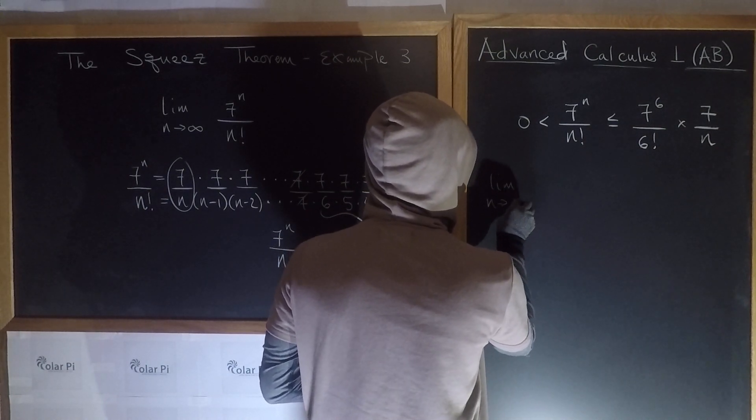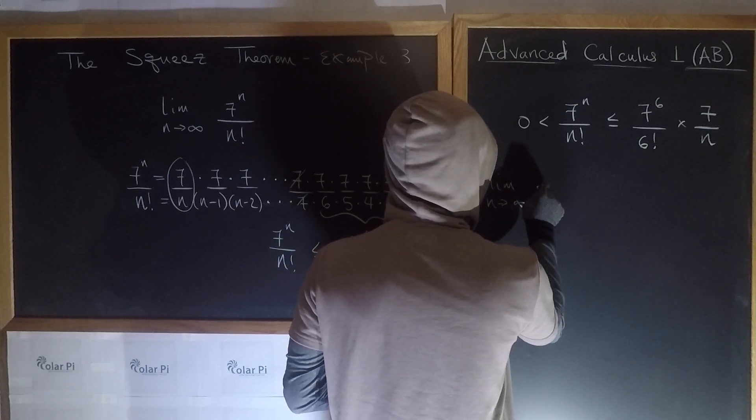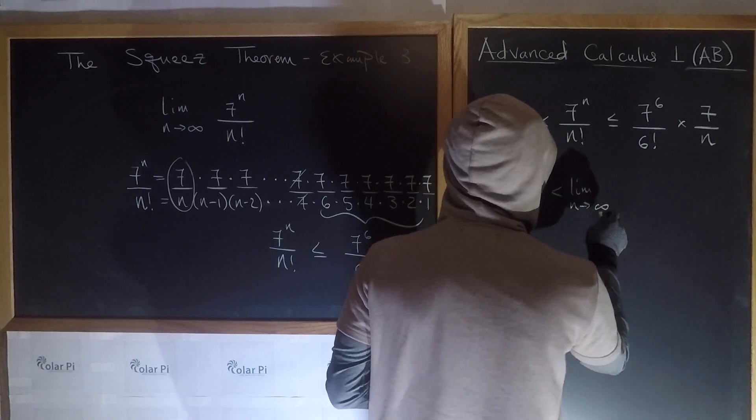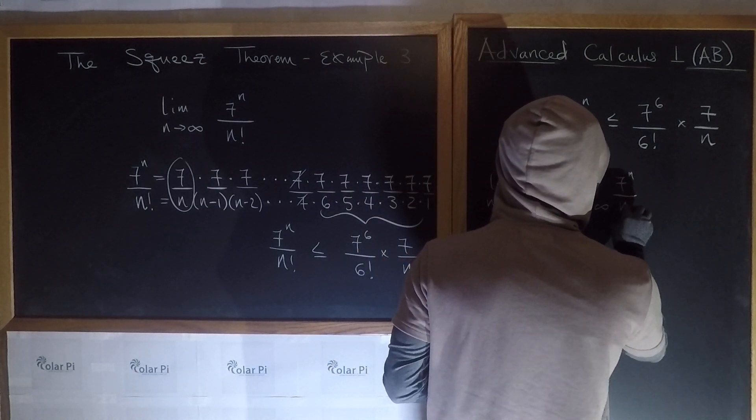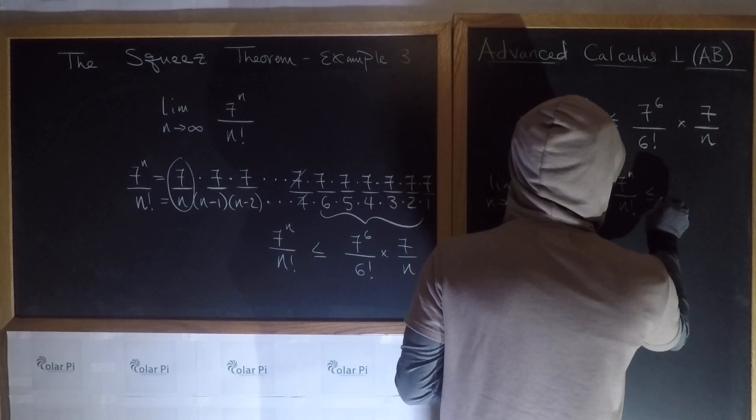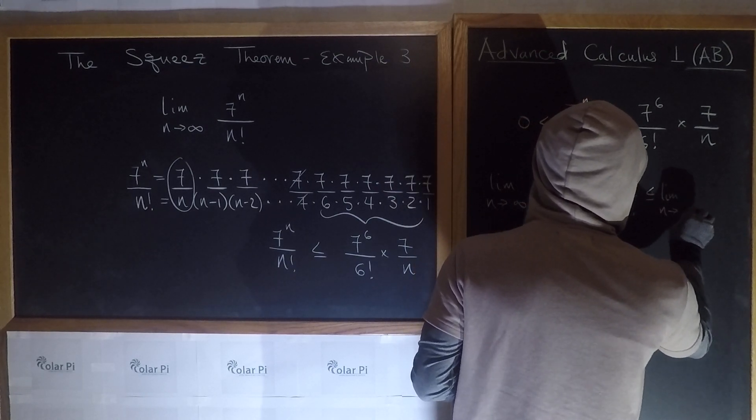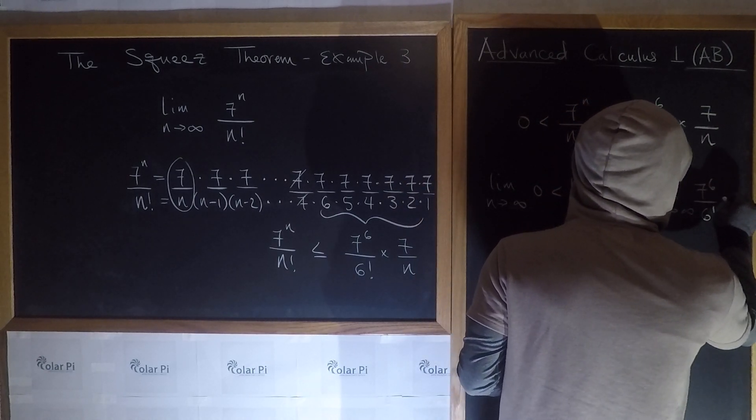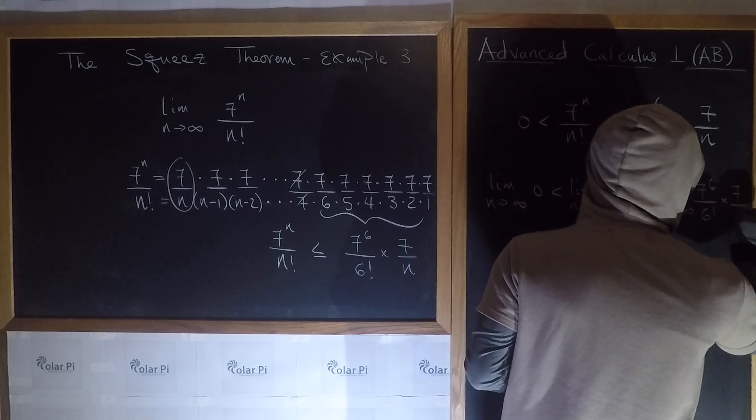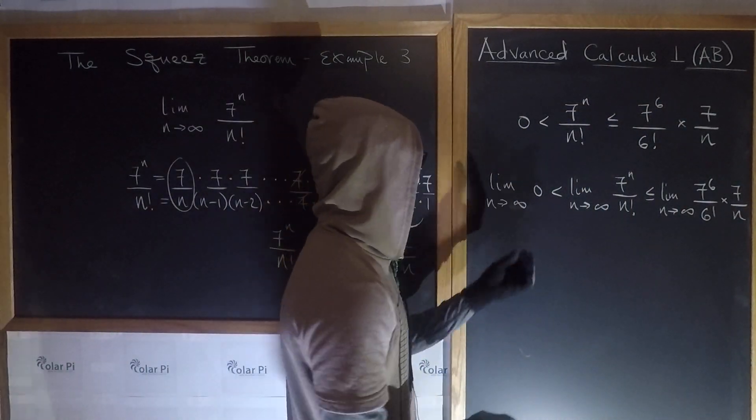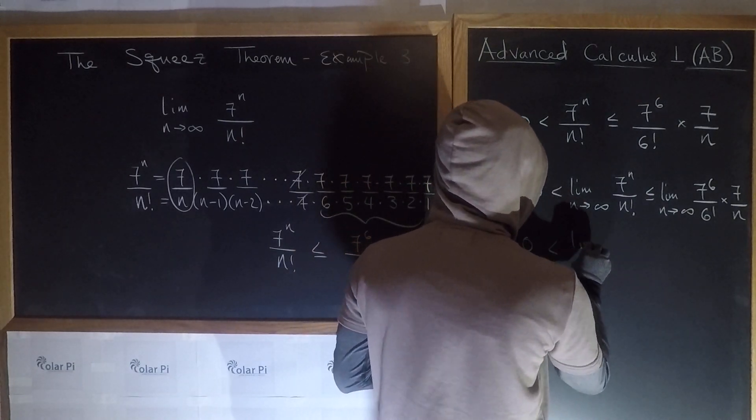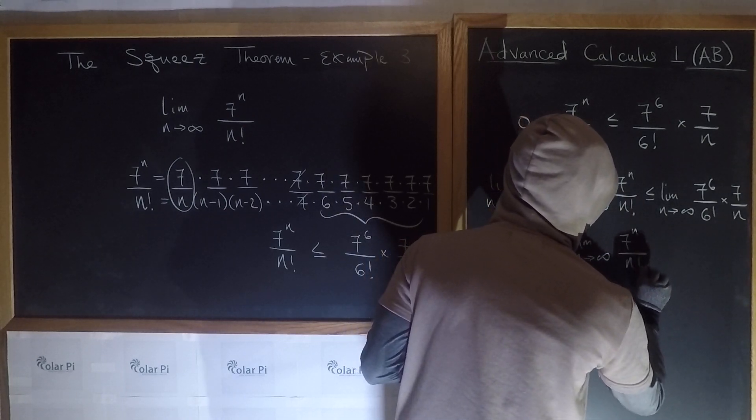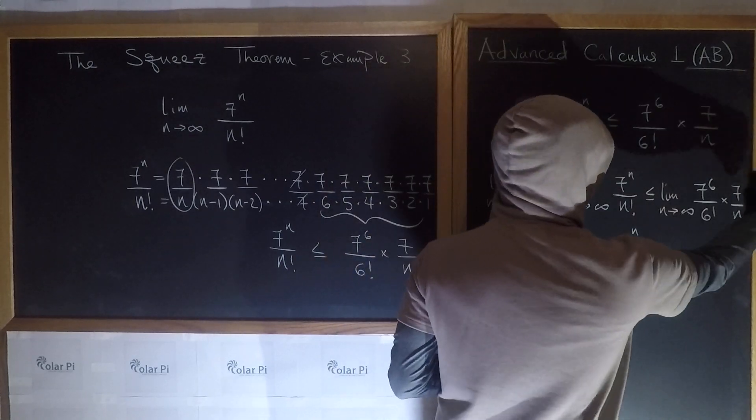Which is less or equal to, lim as n goes to infinity of 7 to the 6 over 6 factorial times 7 over n. And clearly, this here is 0. So we have 0 is less than, which is lesser or equal to, what's this limit? Clearly 0.